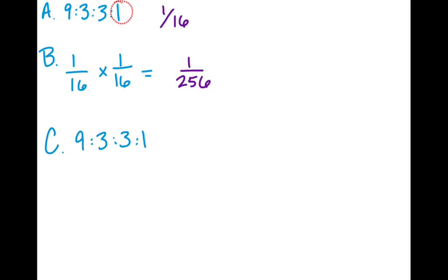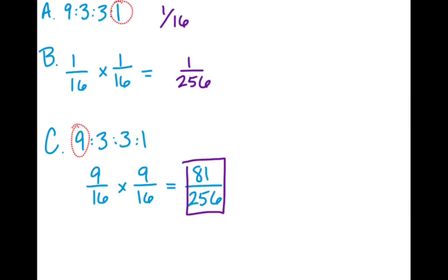And for C, you go back to that ratio, only now we're looking at two individuals showing both dominant traits. So you want to focus on that 9 out of 16. And you would again, just like in B, multiply 9/16 twice, because it's a 9 out of 16 chance for each child. And that should give you 81 out of 256 as your final answer, which is about 32% of the time.